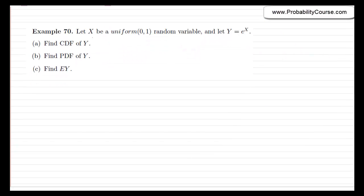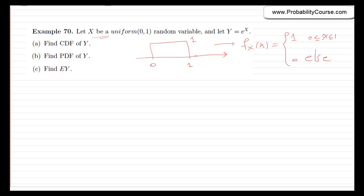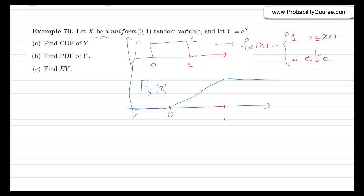Here's an example. Let x be a uniform random variable from 0 to 1. The PDF of x is equal to 1 for x between 0 and 1, and 0 otherwise. The CDF of x is 0 for values less than 0, equals x for x between 0 and 1, and is 1 for x greater than 1. We have another random variable y defined as e to the x, and we are interested in finding the CDF, PDF, and expected value of y.